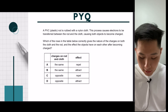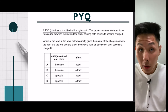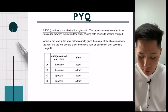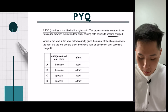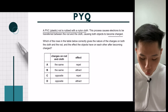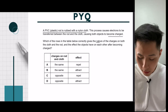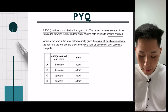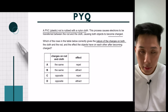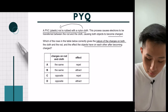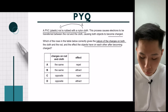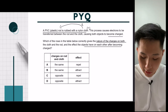A PVC rod is rubbed with a nylon cloth — very similar to what we just discussed. The process causes electrons to be transferred, causing both objects to become charged. Which option correctly gives the nature of the charge on both objects and the effect they have on each other? In this scenario, the electrons from the nylon cloth are going to transfer to the PVC rod, which causes the cloth to have a positive charge.